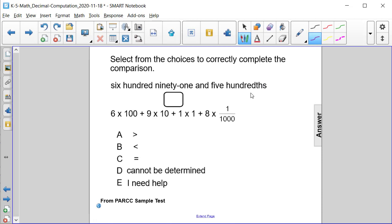We have 691 and 5 hundredths. Well, the hundredths place is the second to the right of the decimal point, and there are five of them. So we need to place a zero in the tenths place.